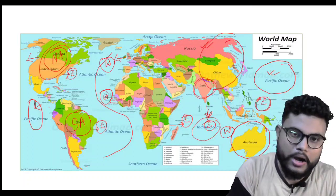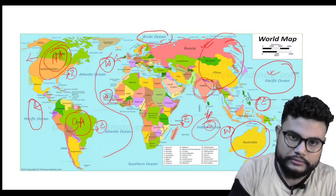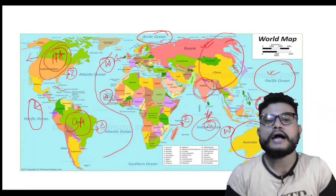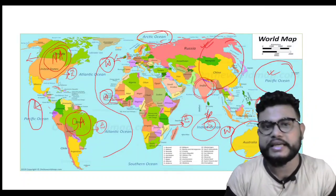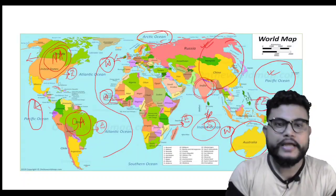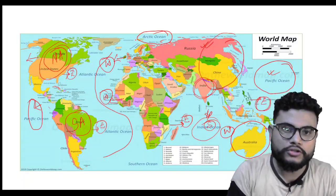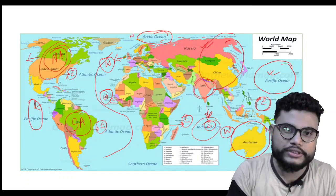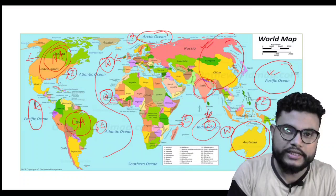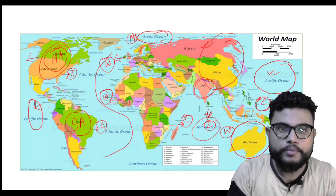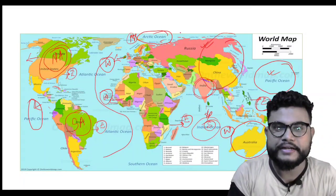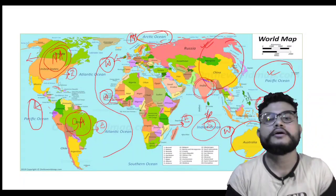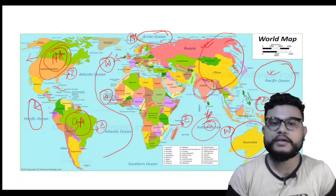Then we will talk about Arctic Ocean. If we look at its location, it is north of the Atlantic Ocean, north of Europe, and it also comes to the north of Russia.